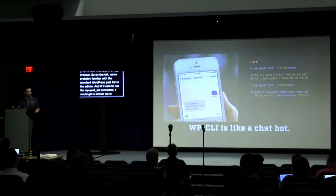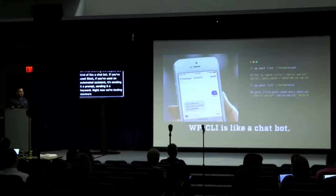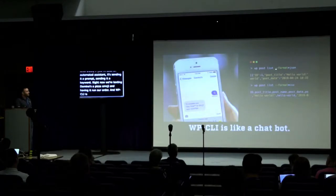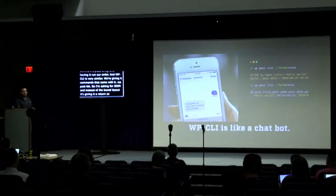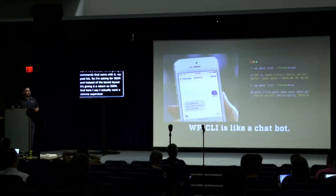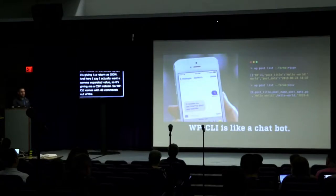It's kind of like a chatbot. If you've used Slack or an automated assistant, you're sending it a prompt or keyword — like texting Domino's an emoji to run your order. WP-CLI is very similar. You give it custom or core commands. With WP post list you can tell it you want JSON and it returns JSON, or you can request CSV and it gives you a CSV instead. WP-CLI comes with 44 commands out of the box — you can interact with posts, pages, users — anything you can do in the WordPress admin, you can do with WP-CLI.